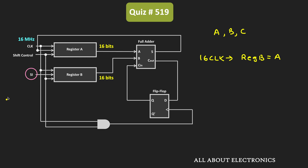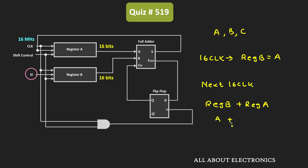After 16 clock pulses, number B will be fed through the serial input. Bit by bit, as we shift number B into register B, the content already present in register B shifts out and gets added bit by bit with register A. During the next 16 clock cycles, the content of register B — which equals A — gets added with the content of register A, which is 0. So A plus 0 is performed and the sum output is stored in register A, making register A equal to number A.